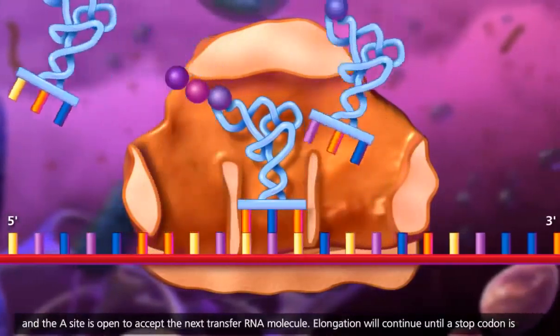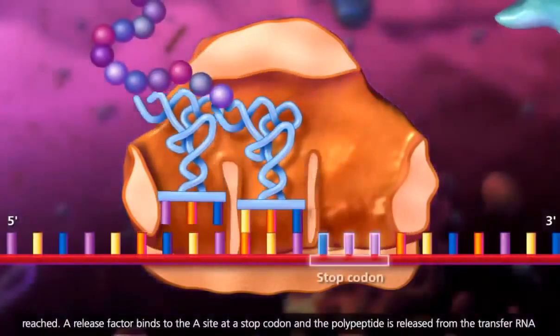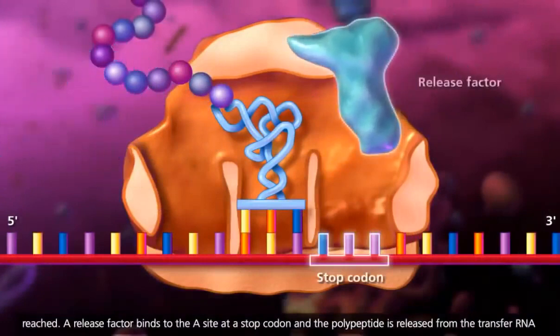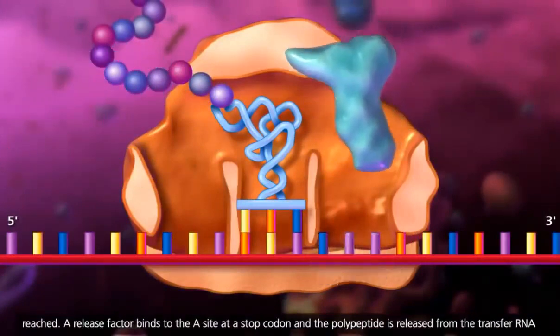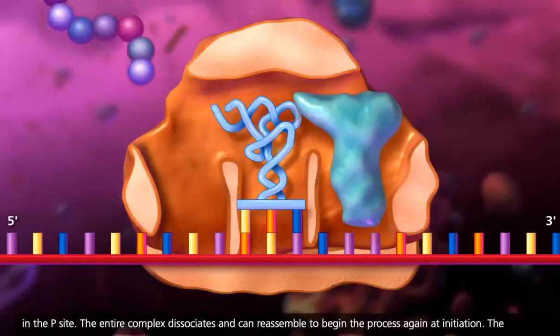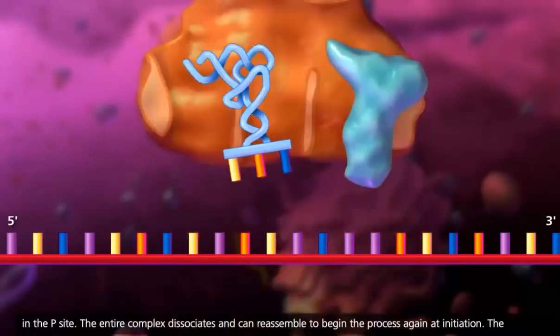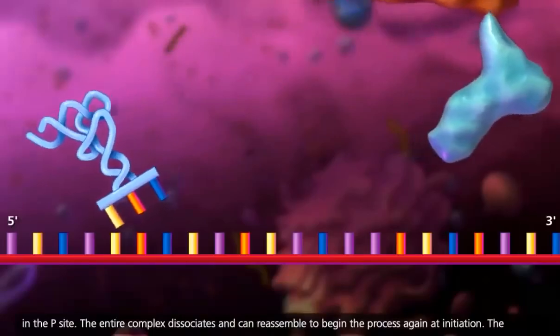Elongation will continue until a stop codon is reached. A release factor binds to the A site at a stop codon, and the polypeptide is released from the transfer RNA in the P site. The entire complex dissociates and can reassemble to begin the process again at initiation.